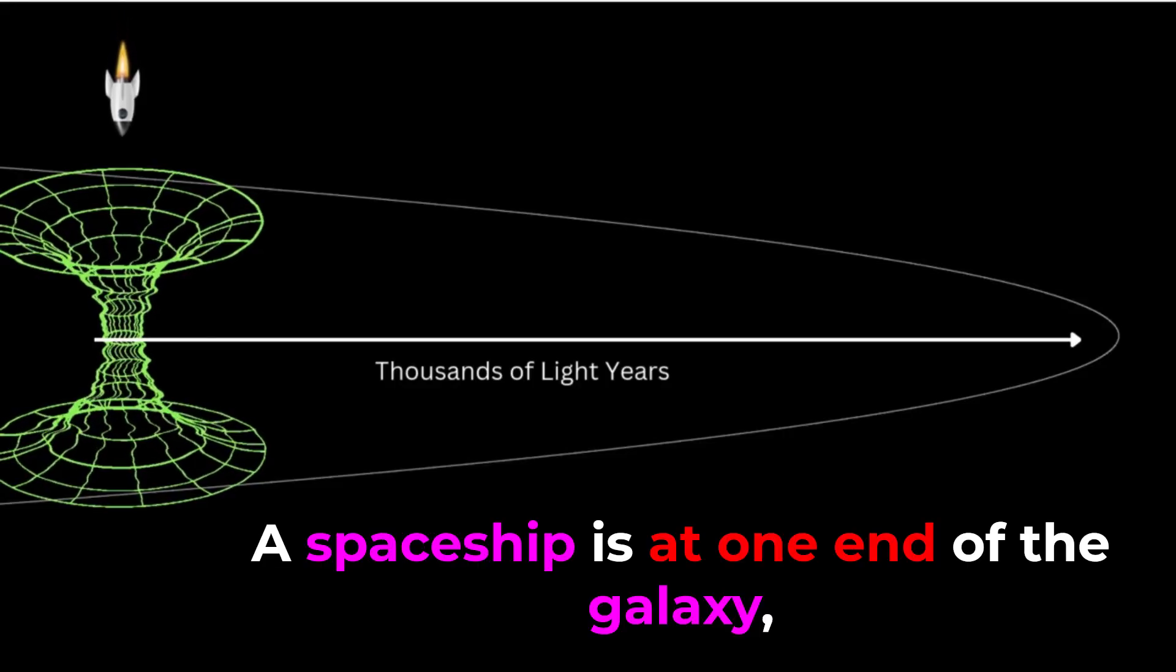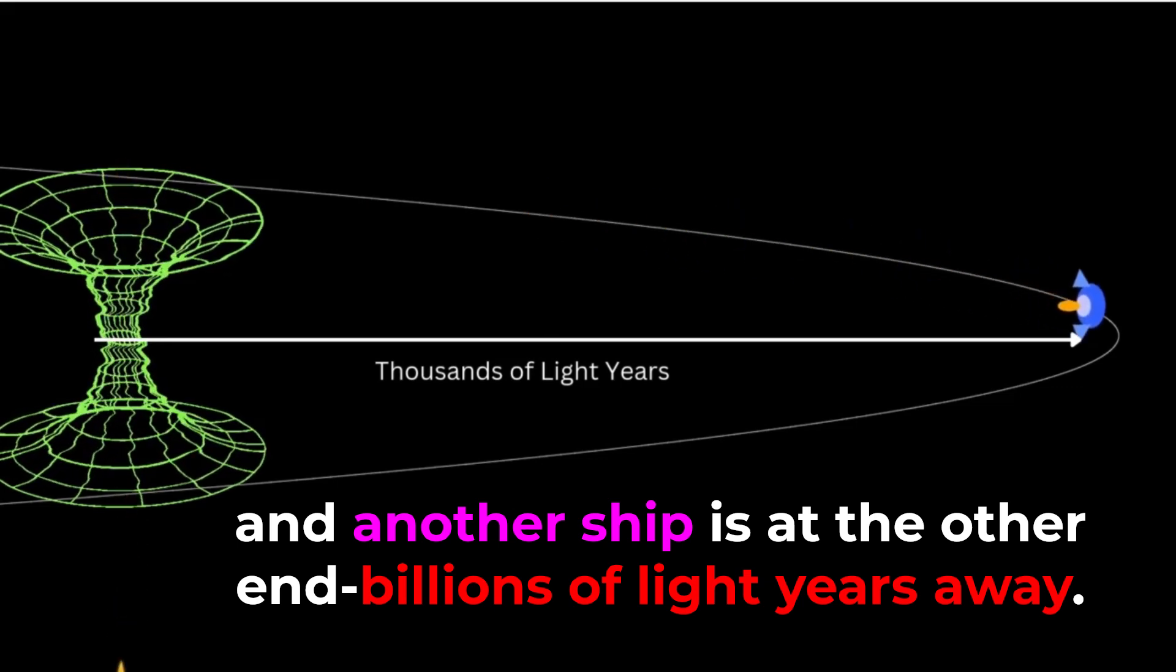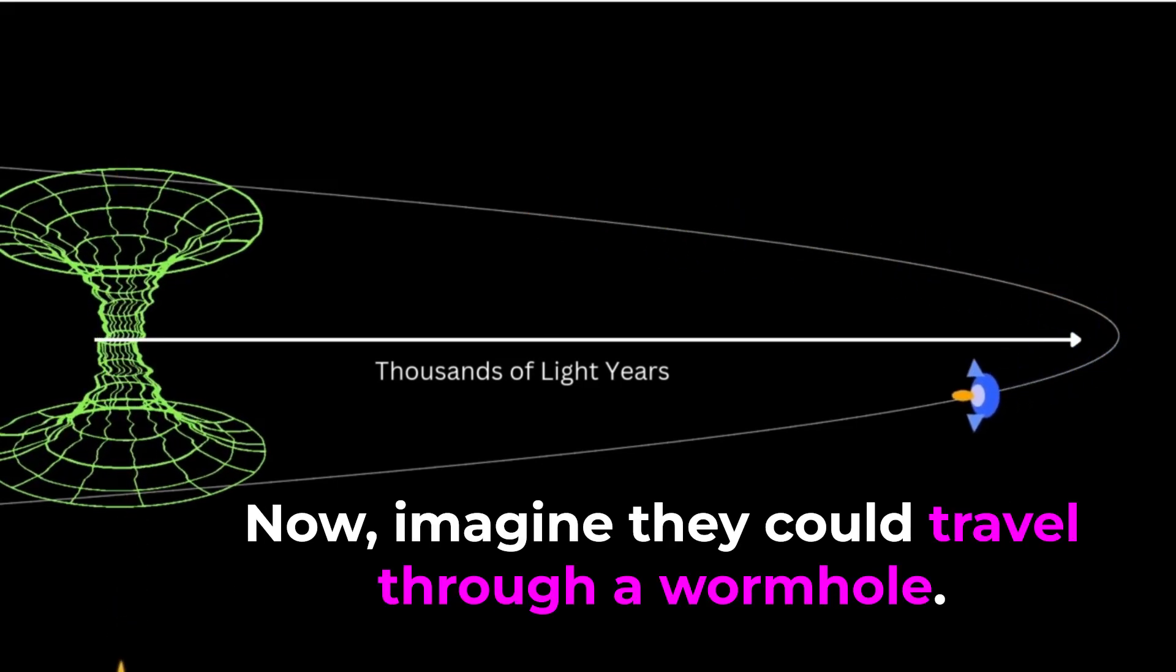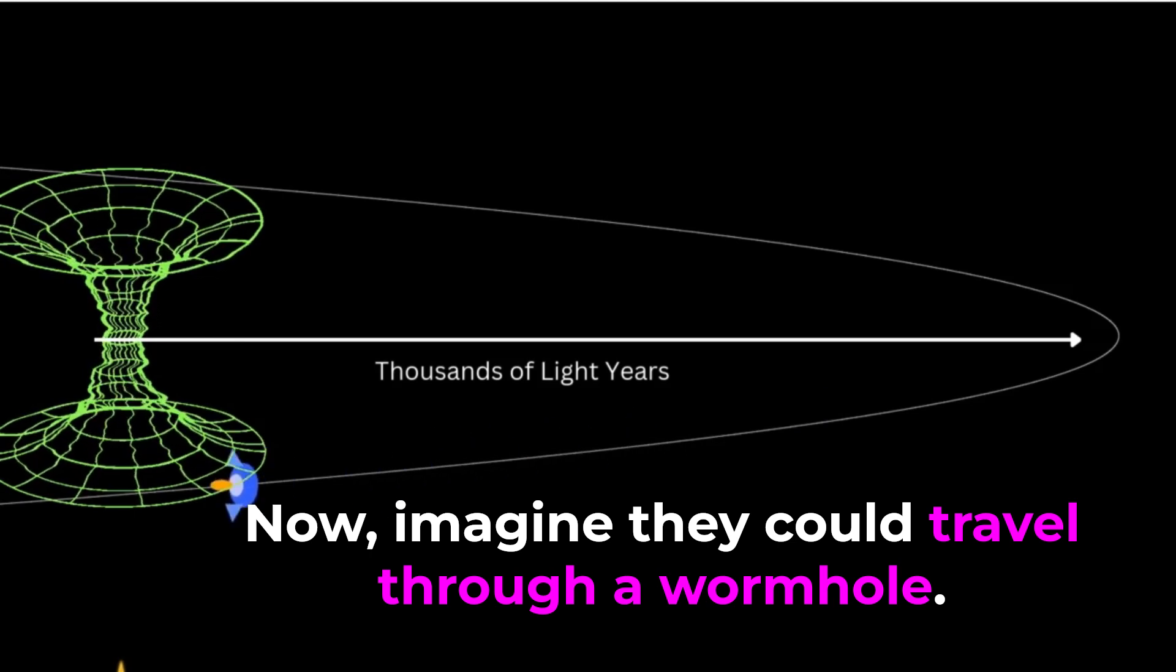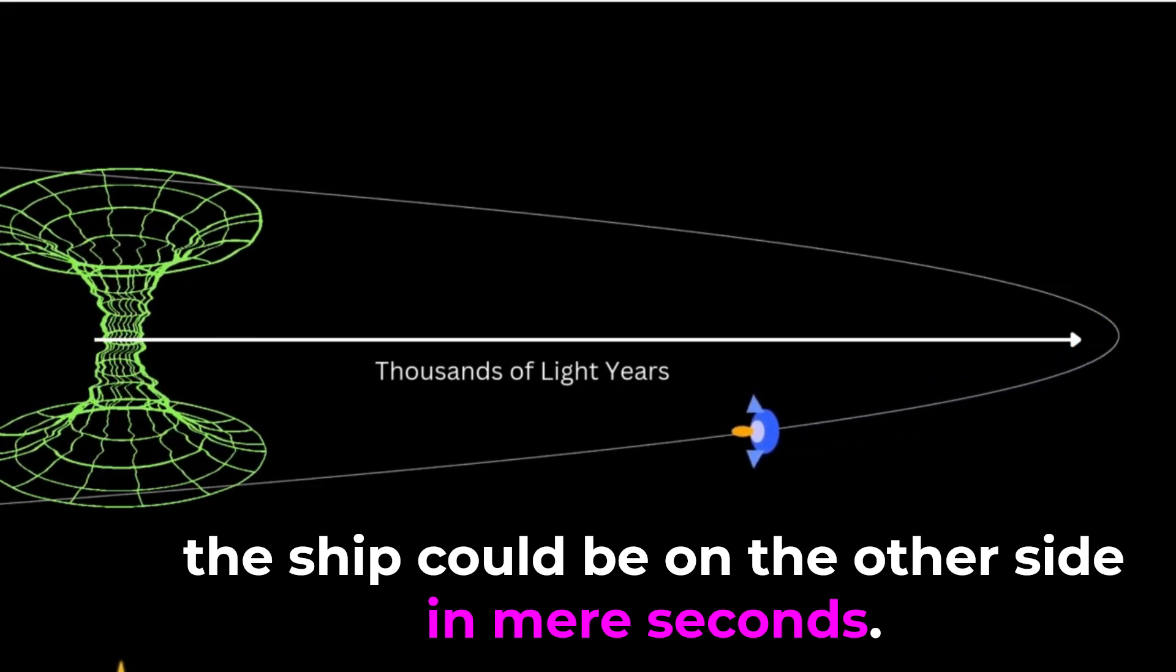For example, a spaceship is at one end of the galaxy, and another ship is at the other end, billions of light-years away. Now, imagine they could travel through a wormhole. Instead of spending centuries crossing space, the ship could be on the other side in mere seconds.